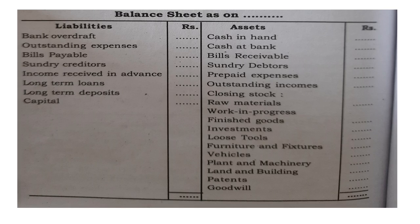This is about the important things concerned with the final accounts of sole trading concern. The sole trading concern needs to know the profit or loss of the business and the financial position of the business. For that purpose, they prepare two statements: trading and profit and loss account, and balance sheet. These two sets of accounts are called final accounts, because they are prepared at the final stage of a business at the end of a particular period. If it is a manufacturing concern, they also prepare a manufacturing account before the trading and profit and loss account. Thank you for watching this video.